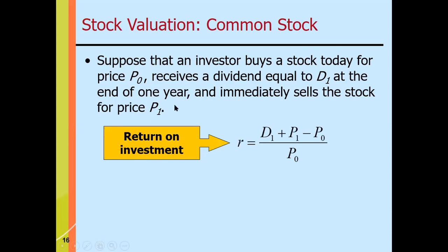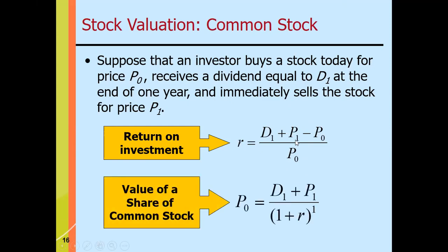The return on investment R equals the dividend of the next period plus the capital gain — which is P sub one (the selling price) minus P sub zero (the cost) — all divided by P sub zero. So the numerator represents all returns in the form of dividend and capital gain, divided by the cost. That is the return on investment.